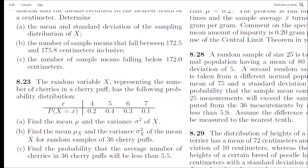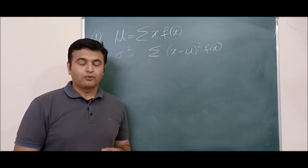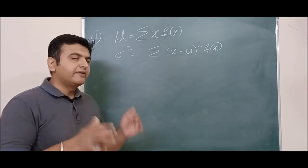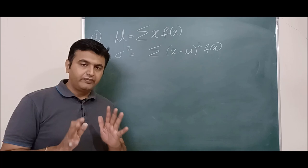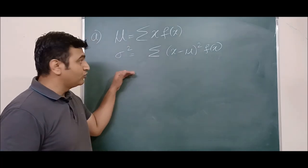Now question 8.23: random variable x represents the number of cherries in a cherry puff with probability distribution x = 4, 5, 6, 7 with probabilities 0.2, 0.4, 0.3, 0.1. We need to find the mean and variance of x, then find the mean and variance of x̄ for a sample size of 36, and finally find the probability that the average number of cherries in 36 puffs is less than 5.5.